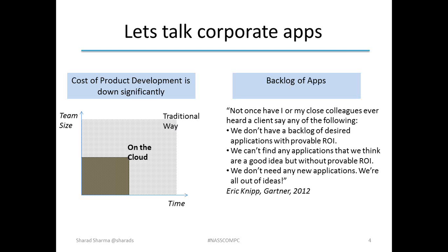Why is this possible? Simply because the cost of application development is coming down — both on the time dimension and on the team size dimension, and therefore the costs are going down. Why is that significant? Because in the corporate environment, today there is a huge backlog of applications that are needed. And as in any other part of the world, there is price elasticity. If corporate applications could be developed cheaper, there will be more consumption of those applications. When you put both of these things together, you get an environment where we can predict many more corporate applications of smaller footprint, everywhere in the world and in Indian companies as well.